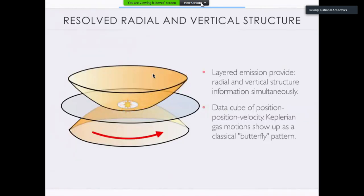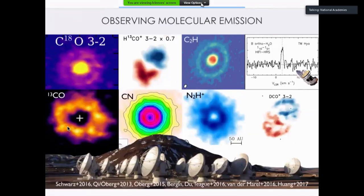Just to point out, these observations are all taking a single line of 13CO, the two-to-one rotational transition. And it's integrating all the emission at all velocities. So we call these moment zero maps.